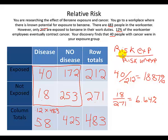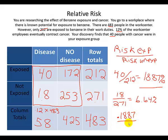Relative risk is just the ratio of those two values. We convert back from percentages to proportions: 0.1887 divided by 0.0664, and that gives us a relative risk of 2.82.